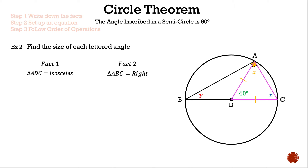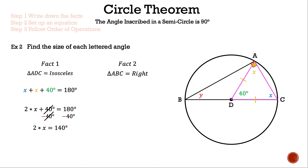From fact one, triangle ADC is isosceles, so: x + x + 40° = 180°. Combining like terms: 2x + 40° = 180°. Subtracting 40° from both sides: 2x = 140°. Dividing both sides by 2: x = 70 degrees.